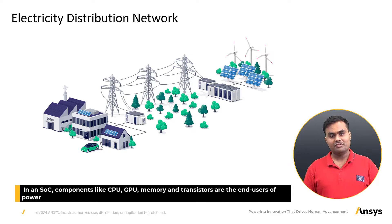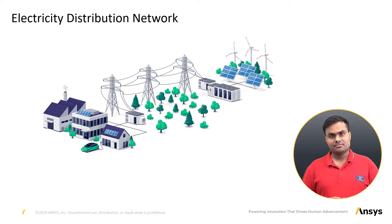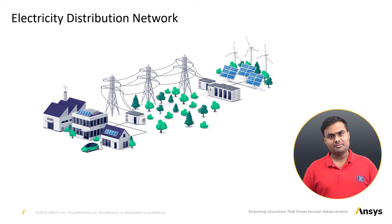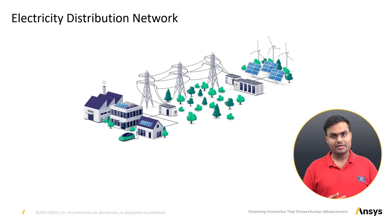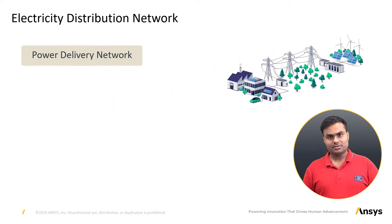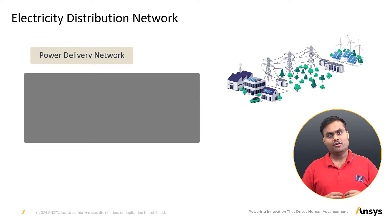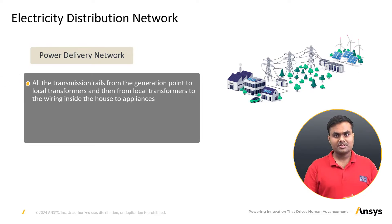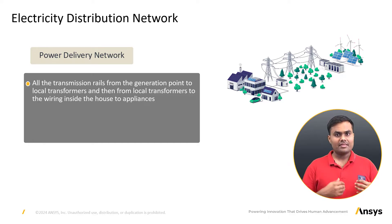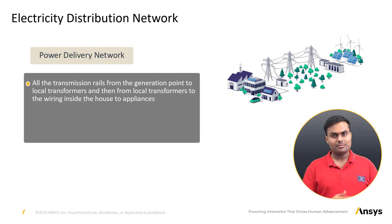Similarly, in a SoC we have protective circuitry and switches for power management. Components like CPU, GPU, memory, and transistors are the end users of power in a SoC. From this electricity distribution network example, we can derive basic components related to power integrity, including the power delivery network. In the electricity distribution system, the PDN consists of all transmission lines from the generation point to the local transformers and from local transformers to the wiring inside the home to the appliances.